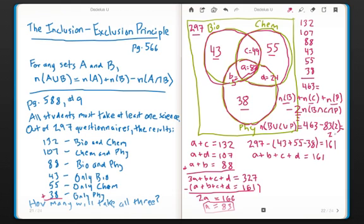We get 297, which of course is the number that we want. That is the total students, in other words, the union of all the students taking bio, chem, and physics.